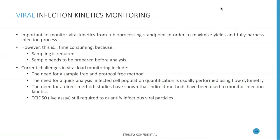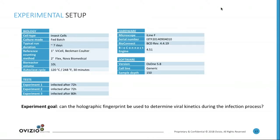The current challenges include the need for a sample-free and protocol-free method, and the need for quick analysis. Infected cell population quantification is currently performed via flow cytometry, but that is also not the quickest method. There is also a need for a direct method, as while there are indirect methods available, there are no methods available for real-time monitoring of infection kinetics.